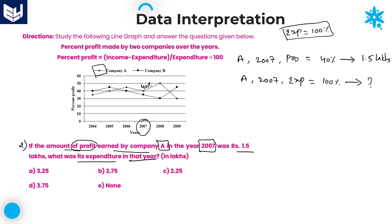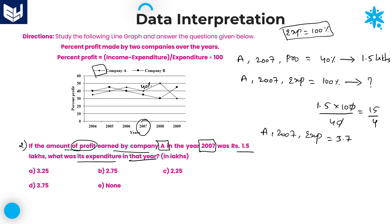Now we need to calculate what 100% equals. By cross multiplication: 1.5 × 100 divided by 40. The zeros cancel, giving 1.5 × 10 = 15, then 15 divided by 4. That equals 3.75 lakhs. So the expenditure of Company A in the year 2007 is 3.75 lakhs. Among the options, 3.75 is option D. Option D is the right answer for this question.